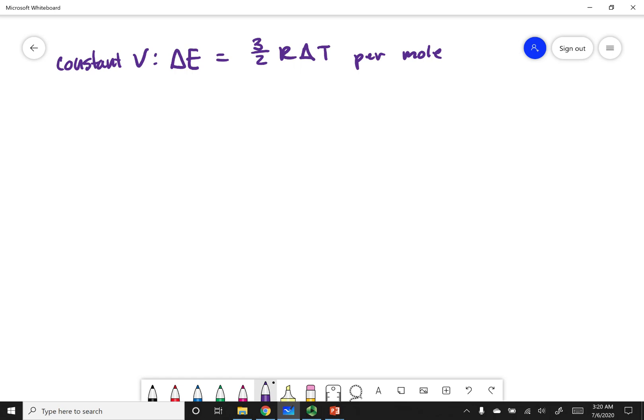And so remember kinetic energy is 3 halves R delta T. Now this is per mole of a monoatomic ideal gas. So if I have more than one mole, I simply have to multiply this equation by the number of moles. Now what we did is we also calculated that 3 halves R corresponds to the molar heat capacity of an ideal gas. And so what I get is nCv delta T. And so this is going to be the change in internal energy for a monoatomic ideal gas.